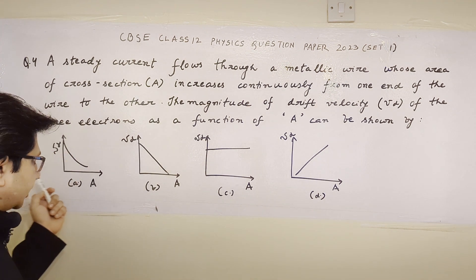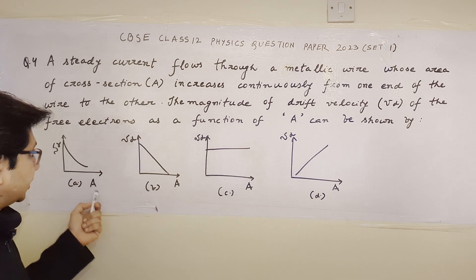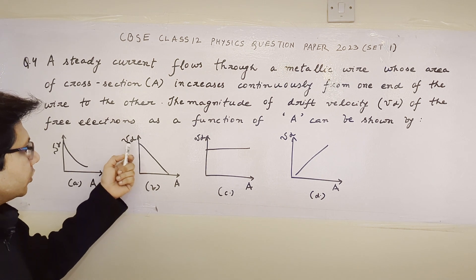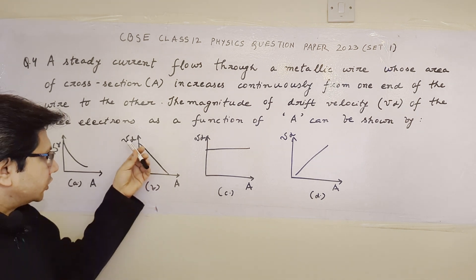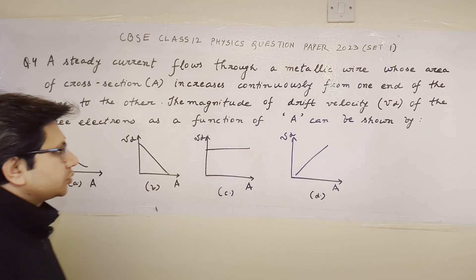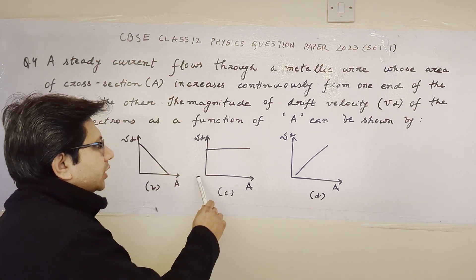Now in this particular graph, when the area increases, the drift velocity decreases in a linear manner. And in this particular graph, when the area of cross-section increases, the drift velocity remains constant.